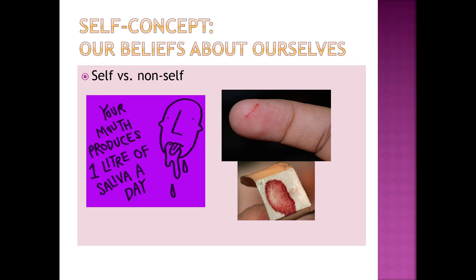These are examples of how we can start to think about what the self-concept is by starting to eliminate what it is not. If the blood is no longer part of you once it has separated from your body, if the saliva is no longer part of you once it has come out of your mouth, you can start to understand what is not part of myself. Things that have left our physical body, I think we can all agree, are probably non-self.